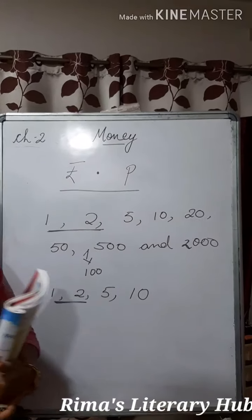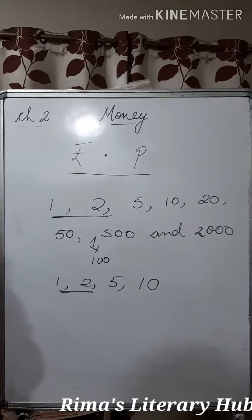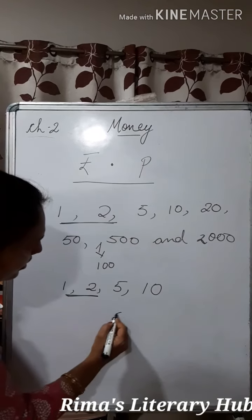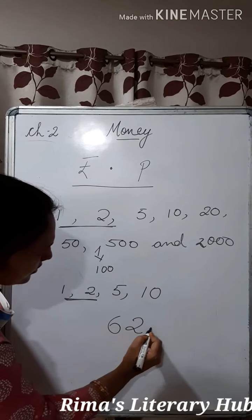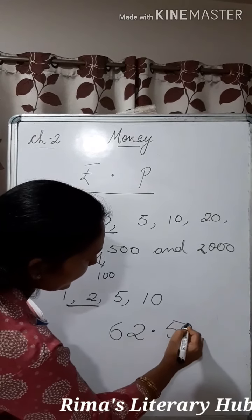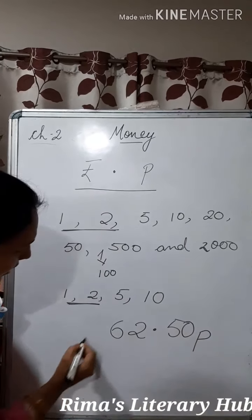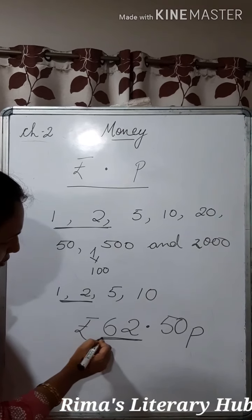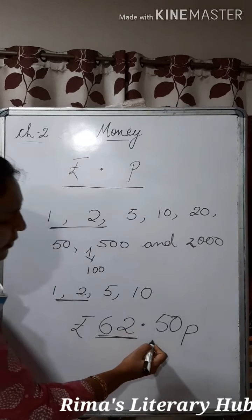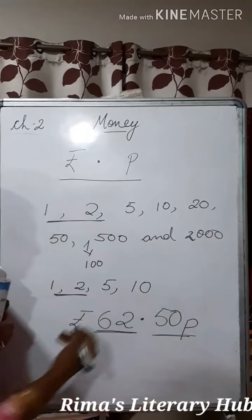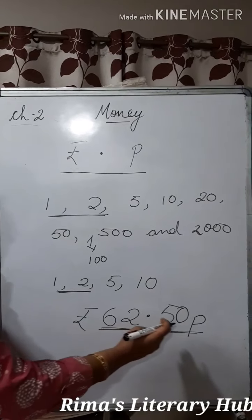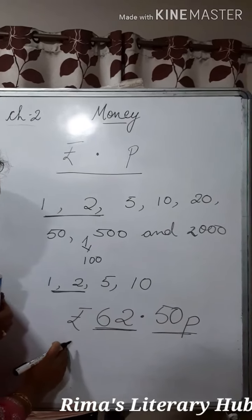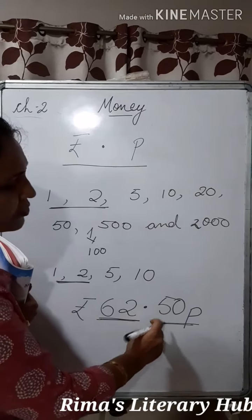Now, suppose you have to write 62 rupees 50 paise — how will you write it? 62 rupees, 0.50 paise. Here you put the symbol for paise, and here you put the symbol for rupee. The rupee is written to the left of the point, and the paise part is written to the right of the point. So 62 rupees 50 paise is separated with the help of a point — the rupee part always to the left, the paise part to the right.